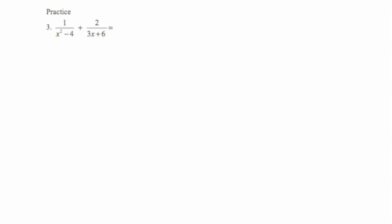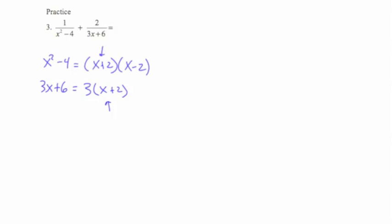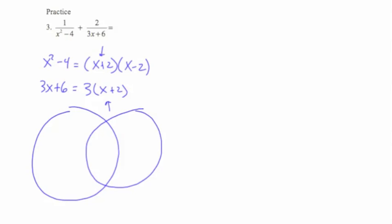I'll go ahead and work the problem now. I'm going to factor x squared minus 4, which factors into (x plus 2)(x minus 2). Then I'll factor 3x plus 6 with a greatest common factor of 3, which gives 3 times (x plus 2). Notice they both have a common factor of (x plus 2), so in my Venn diagram, that's going to go into the overlap.